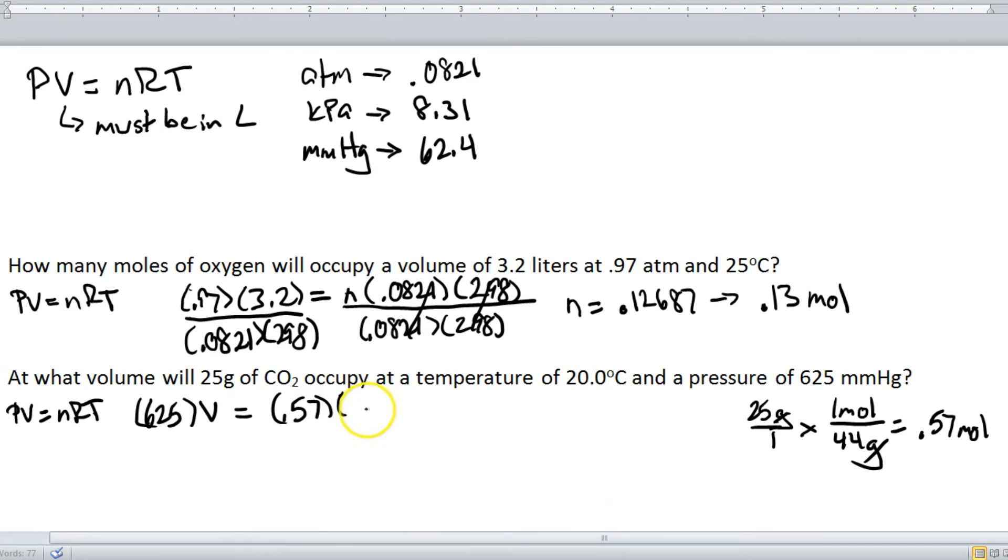For our value for R, well this time pressure is measured in millimeters mercury, so I'm going to grab this 62.4 and plug it in there. And temperature is 20 degrees Celsius plus 273 gives you 293. This time our variable is on the other side of the equal sign, so we're going to simply divide both sides by 625. We'll do .57 times 62.4 times 293 divided by 625. And when we calculate that all out, we get 16.67. And we can have only two sig figs, because as you can see, 25 is only two sig figs. The next number is a 6, which means we're going to round this up to 17. And this being volume, our units are liters.